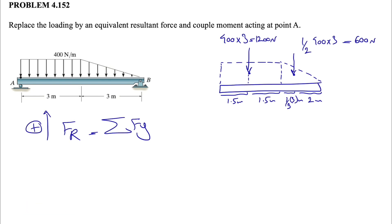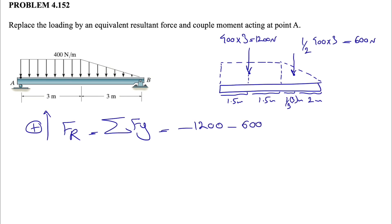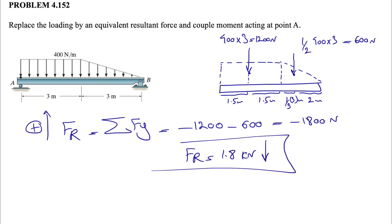Now, to find the resultant force FR, we take the sum of all forces in the y-direction, since all forces act vertically. We have the 1200 N force and the 600 N force, both acting downward, so they are negative. This gives us minus 1800 N, or FR equals 1.8 kN downward.